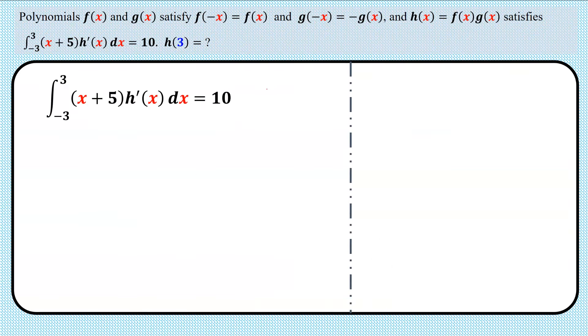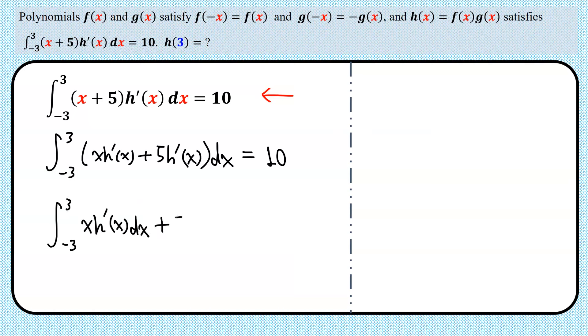Now let's take a look at the given integral condition. This condition rearranges to integral of xh'(x) + 5h'(x) dx equals 10, which again can be written as integral of xh'(x) dx plus 5 times integral of h'(x) dx equals 10.